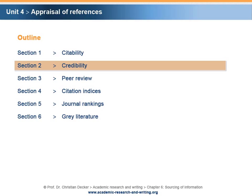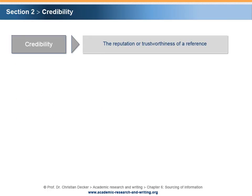Section 2: Credibility. Credibility means that a reference has a certain reputation or trustworthiness. There are a number of criteria and corresponding indicators that help to form an opinion about the credibility of a reference.